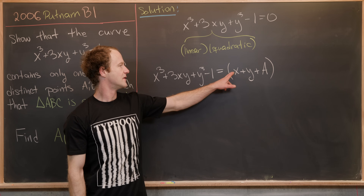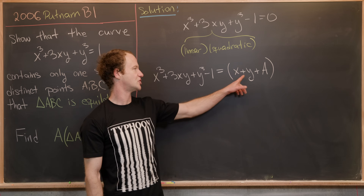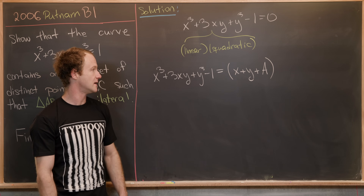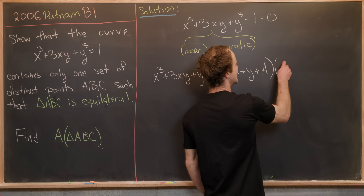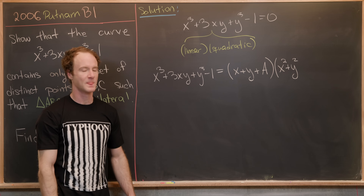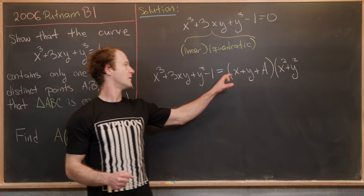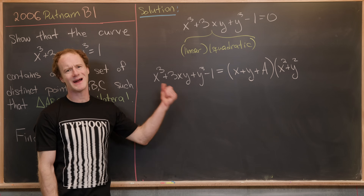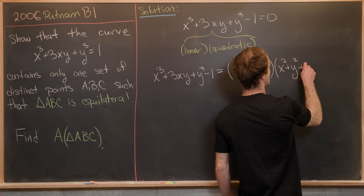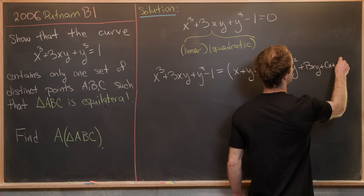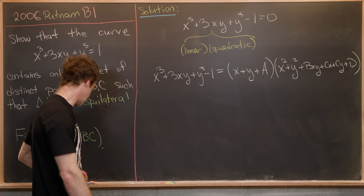You might ask how we know the coefficients of x and y are both 1. Well, they have to be equal by symmetry, and we can take them to be 1 because the coefficients of x³ and y³ are 1. Likewise the coefficients of x² and y² in the quadratic factor can both be taken as 1, and we factor appropriately. So the quadratic polynomial begins x² + y², and then we add bxy + cx + cy + d, where by symmetry the coefficients of x and y are the same.